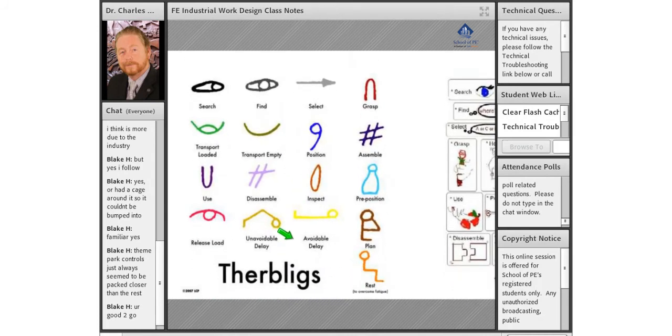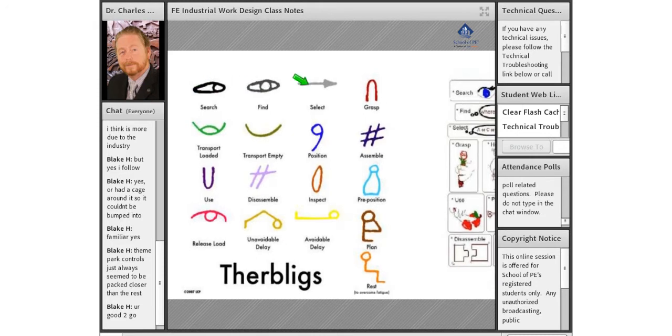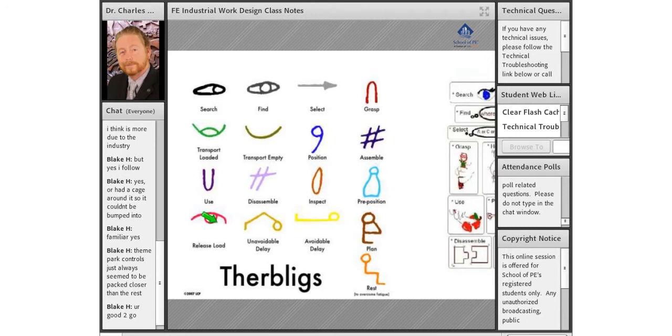The criteria of what an individual could go through when they are working a given workstation is: we can have the individual have to search for something, find the location, select it, get hold of it, then transport it over to someplace, position it, and then assemble things, disassemble, inspect, use being like a screwdriver before they assemble it, they might have to pre-position it, they can release the load.